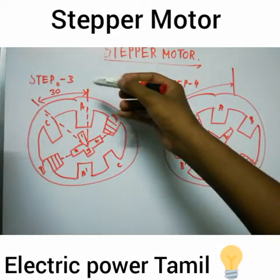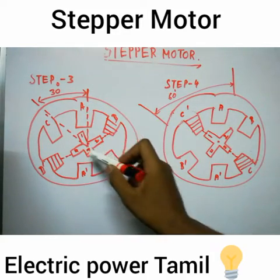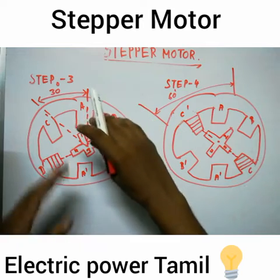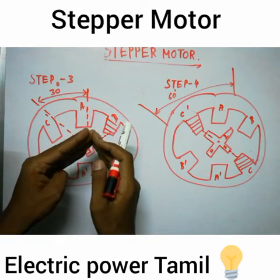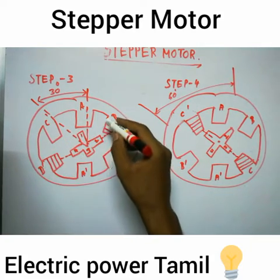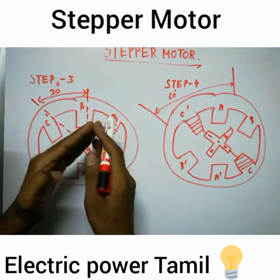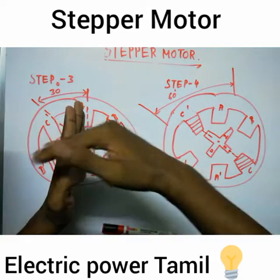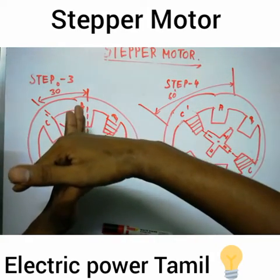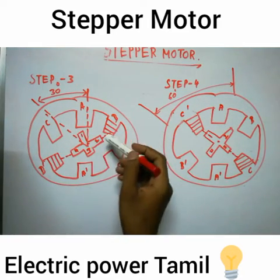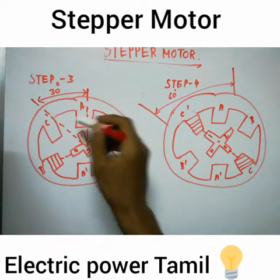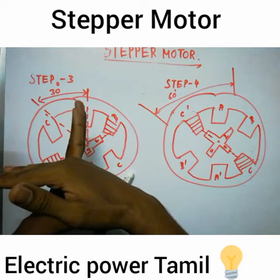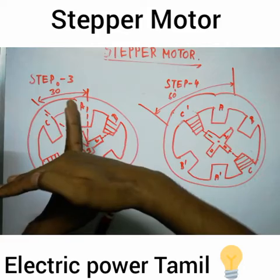Now look at Step 3. We will energize the next phase. A phase and B phase are in normal mode. Then B' is energized — this causes rotor teeth 2 and 4 to align. Previously, teeth 1 and 3 were aligned; now teeth 2 and 4 align, and the rotor rotates by a step angle.